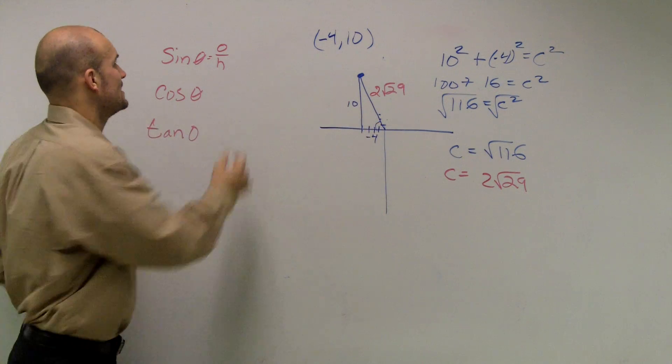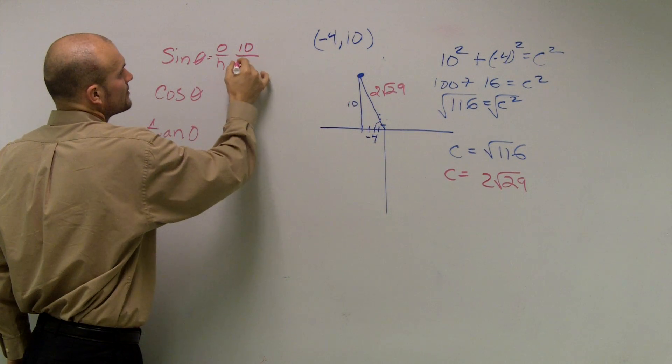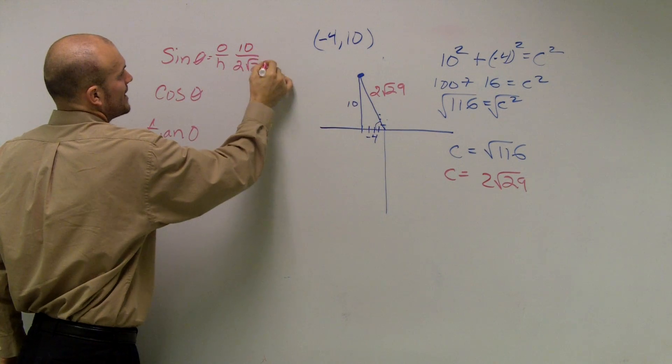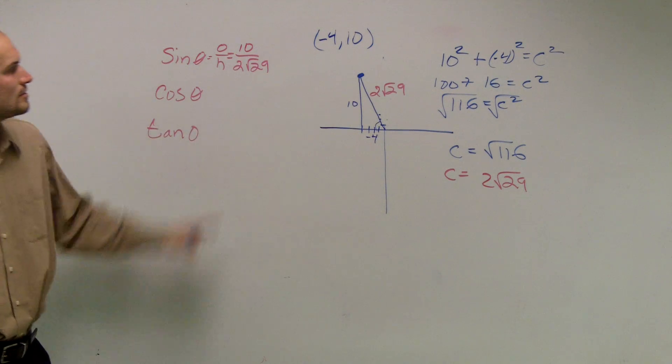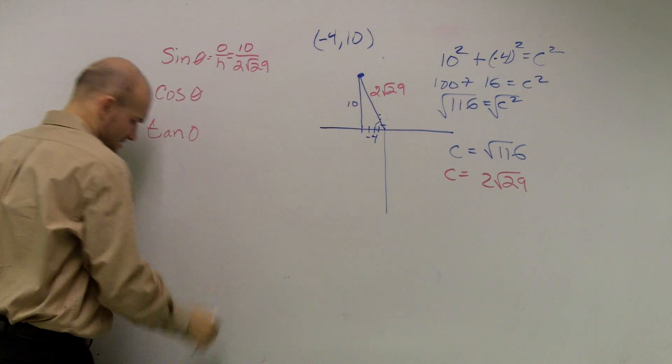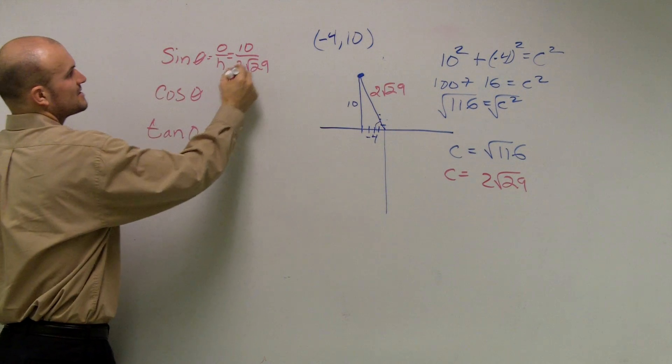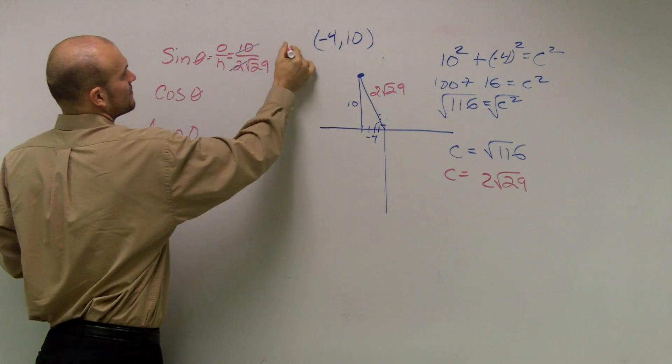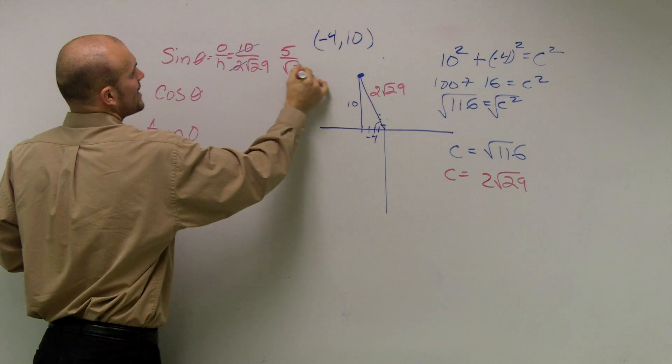my opposite side is going to be 10 over 2, radical 29. So quickly, I can automatically simplify this to obtain 5 over radical 29.